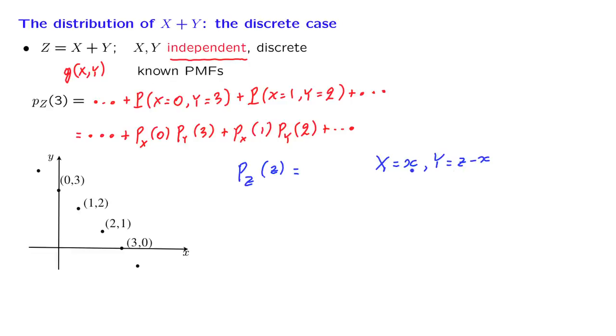For a given value of little x, we have a particular way that the sum is equal to z, and this particular way has a certain probability. But little x could be anything, and different choices of little x give us different ways that the event of interest can happen. So we add those probabilities over all possible x's. And then we proceed as follows. We invoke independence of x and y to write this probability as a product of two probabilities, and then we use PMF notation instead of probability notation to obtain this expression here.